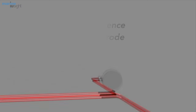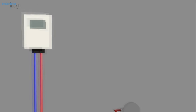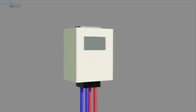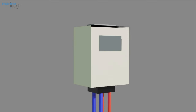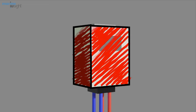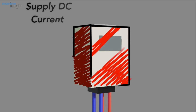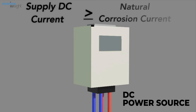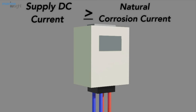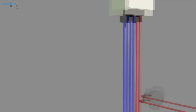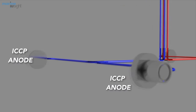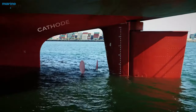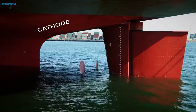The reference electrode measures the natural corrosion current, which is nothing but the potential difference between the hull and this reference cell. We need to measure this corrosion current in the hull so that we supply a DC current which is either equal to or slightly greater than the natural corrosion current and is in the opposite direction to the impressed current anode. This in turn supplies a protecting current to the hull of the ship, making the hull a cathode protected from corrosion.